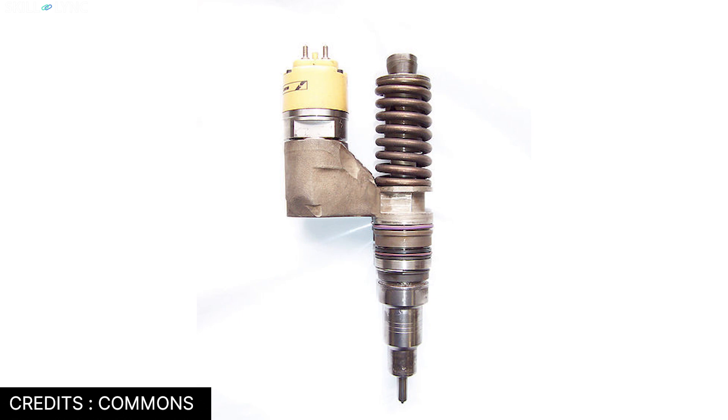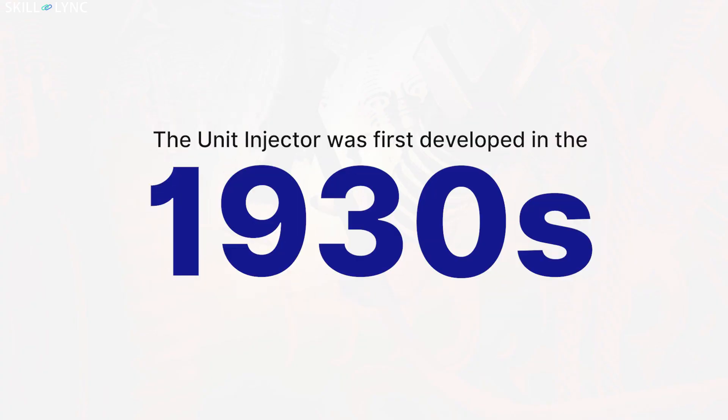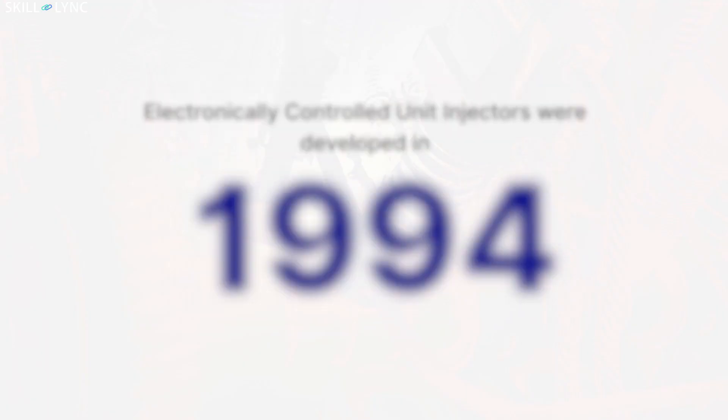The unit injector was first developed in the 1930s and at that time it was completely mechanical in operation. For injecting the right amount of fuel at the right time, the electronically controlled unit injectors were developed in 1994.